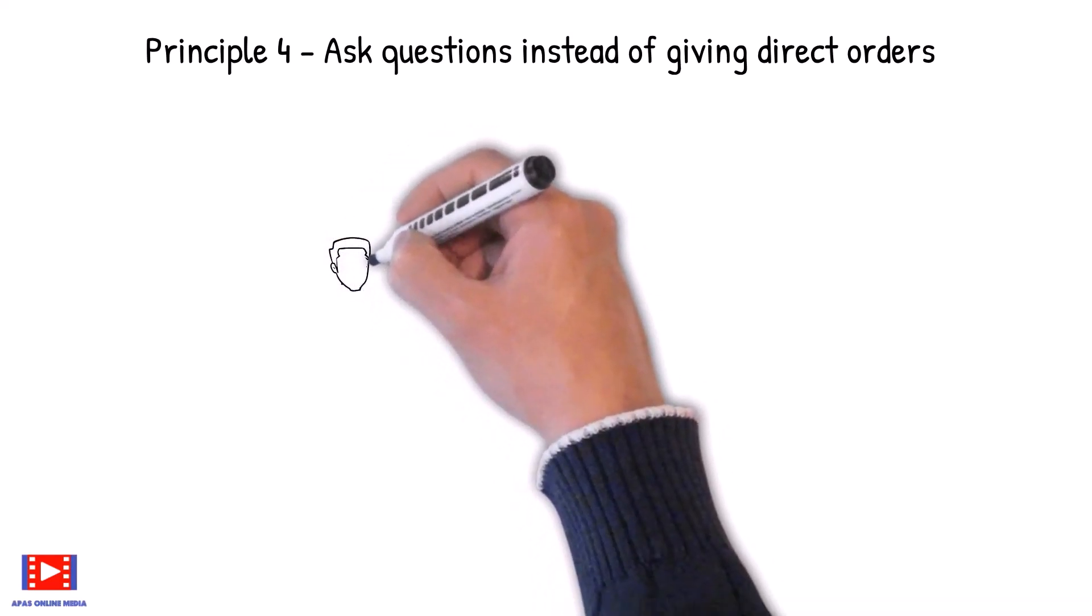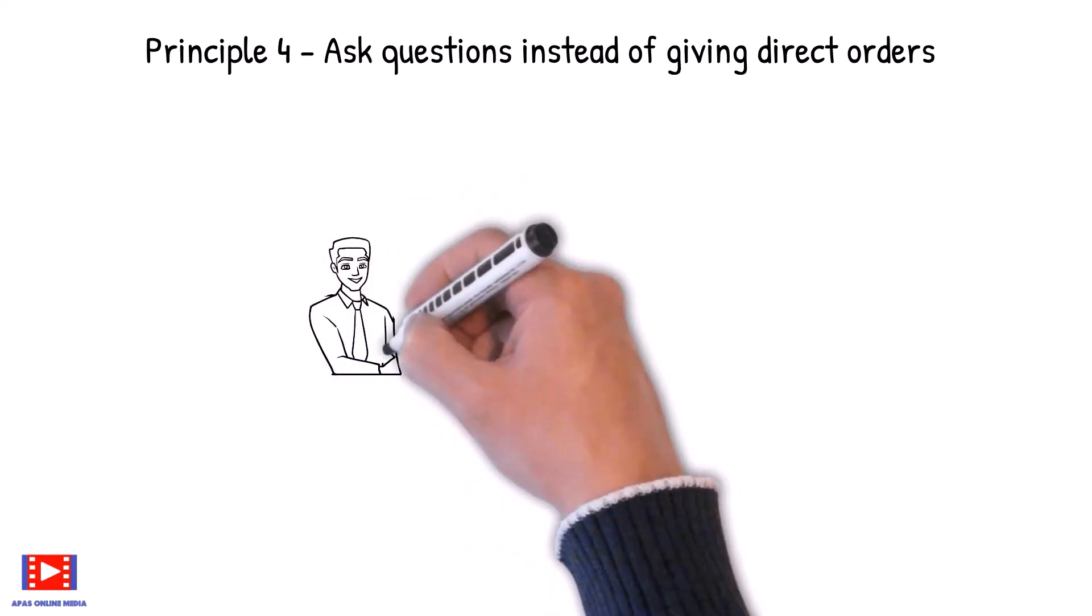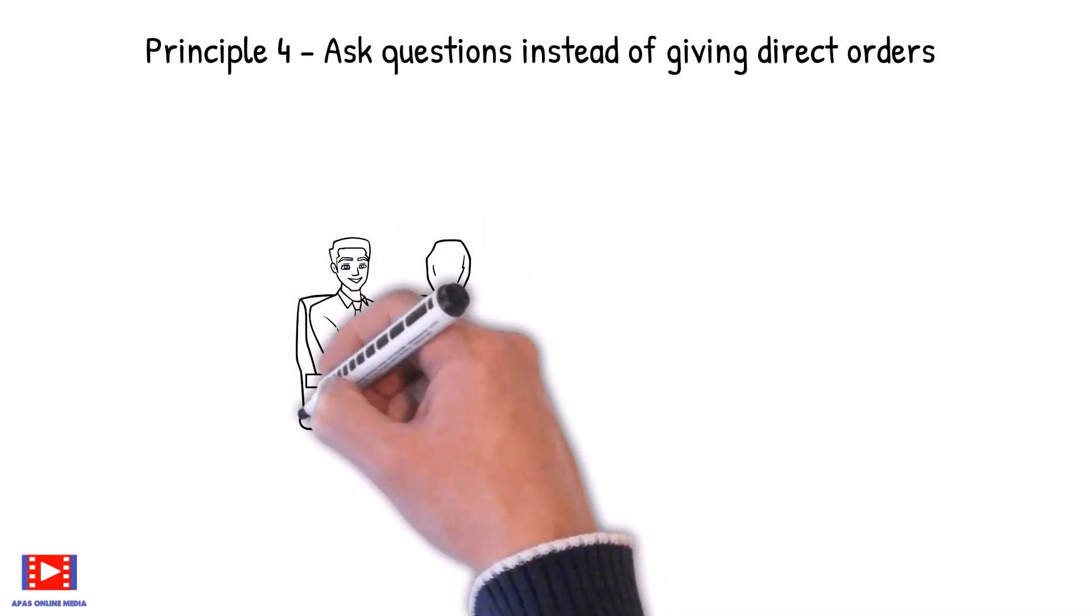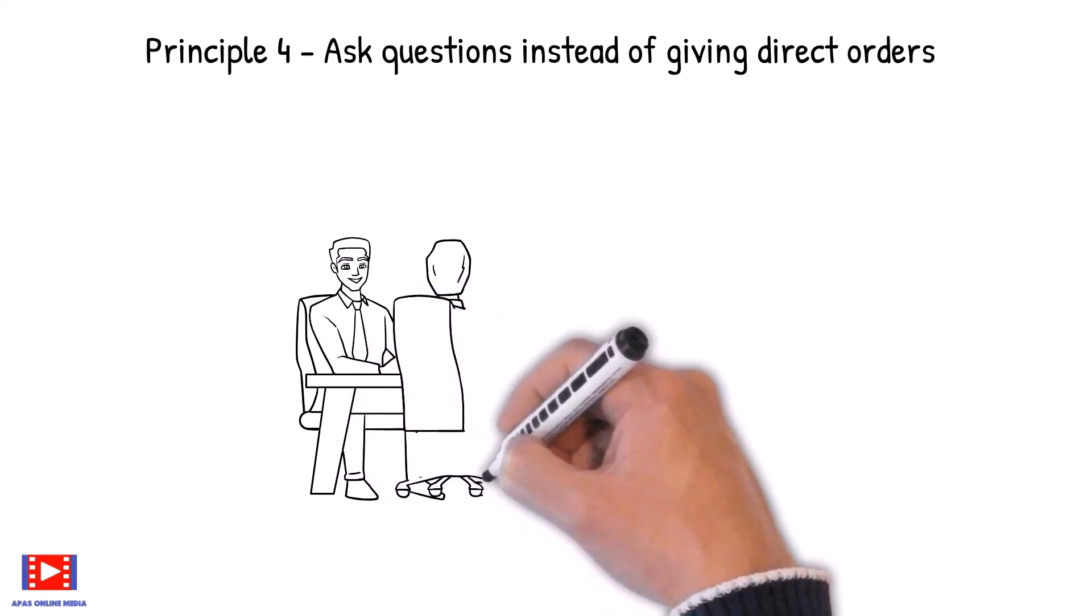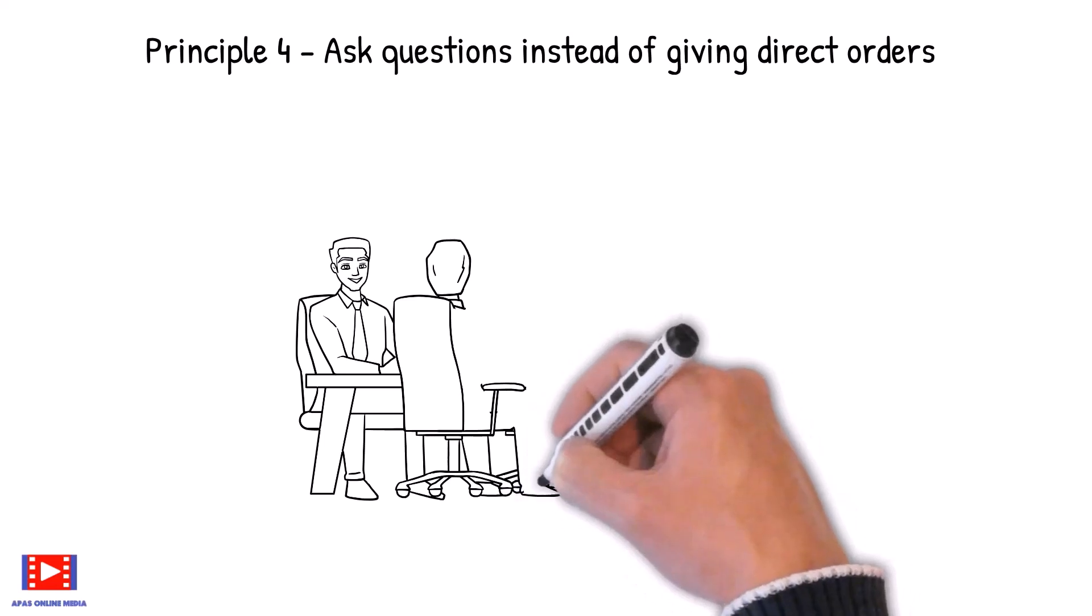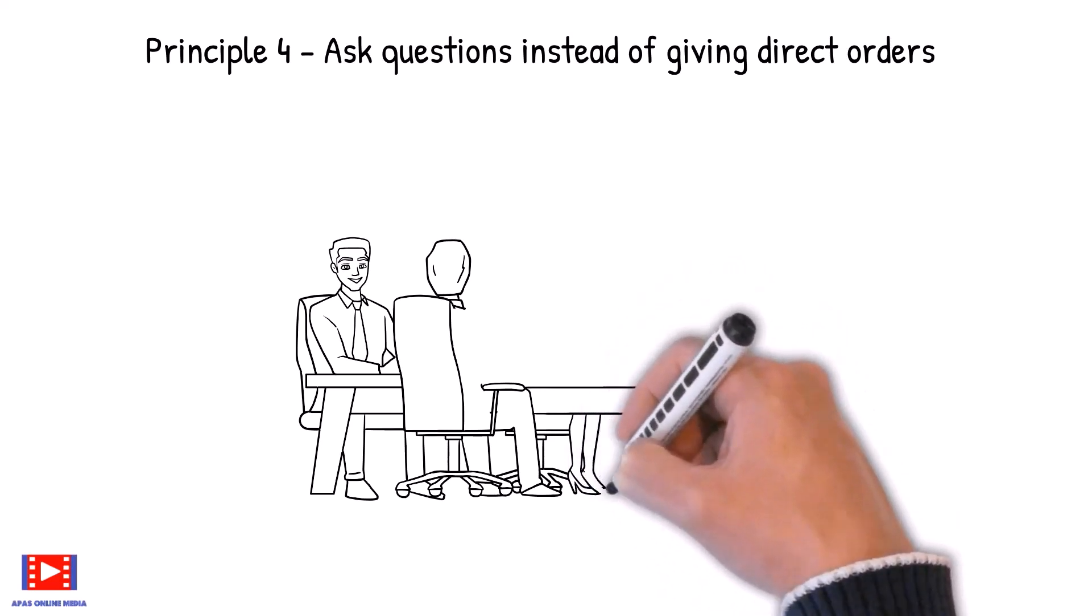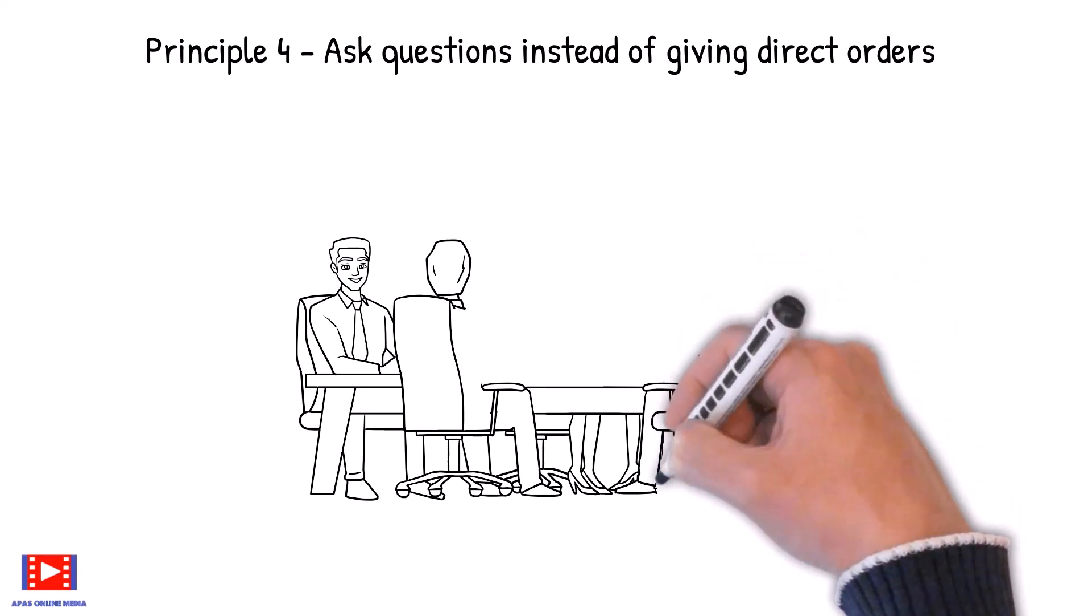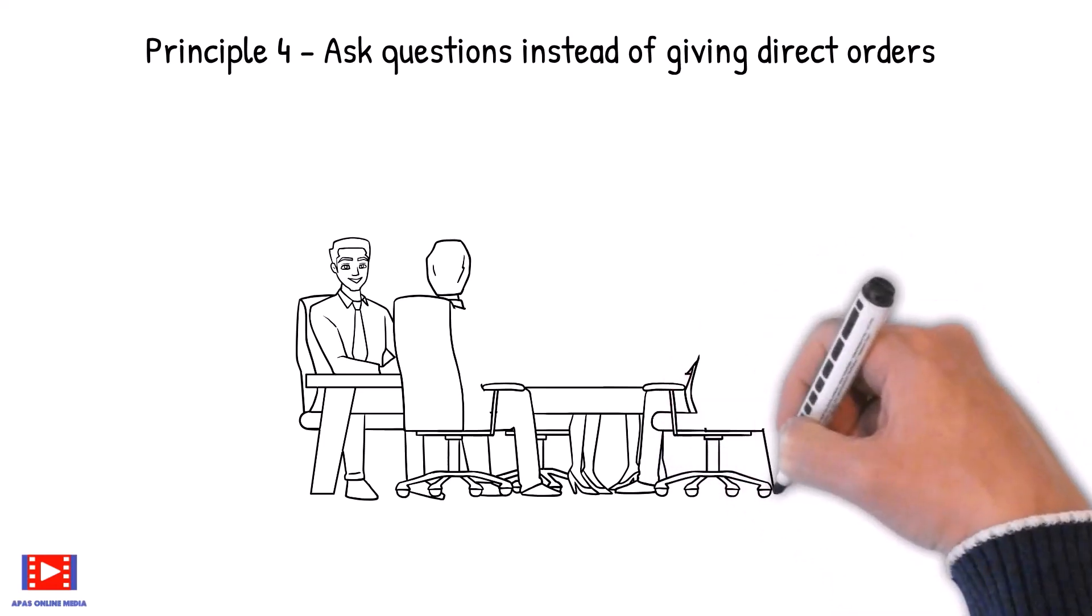Principle 4: Ask questions instead of giving direct orders. Let's be honest about it - no one likes to take orders. Instead of giving direct orders, we can always ask questions, something like: What do you think of this? Such questions will always offer an opportunity to people to be a part of the process. A technique like that makes it easy for a person to correct errors. It saves a person's pride and gives them a feeling of importance. It encourages cooperation instead of rebellion.